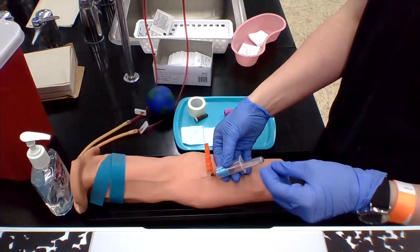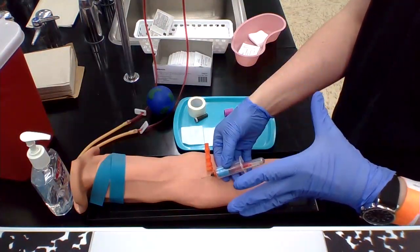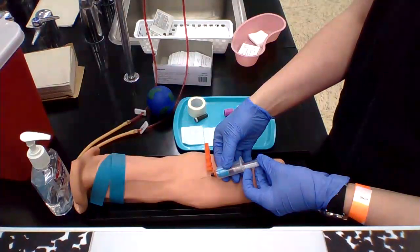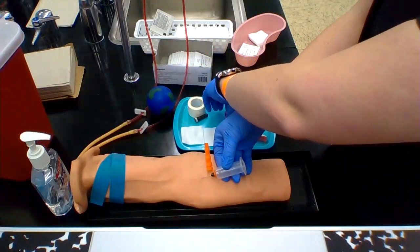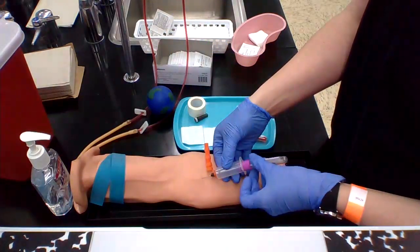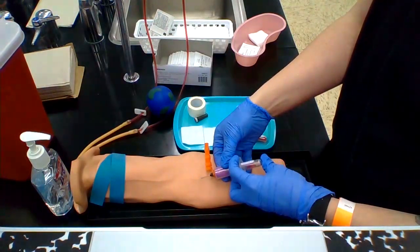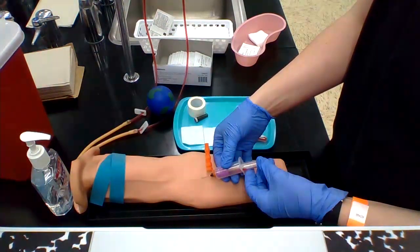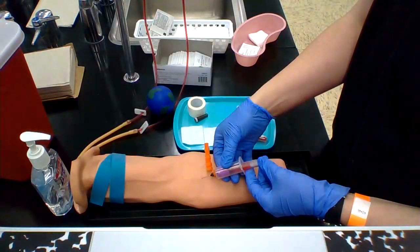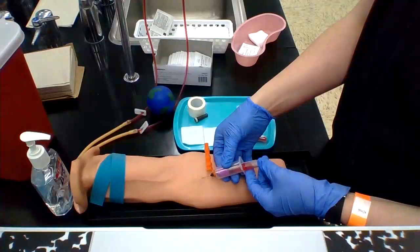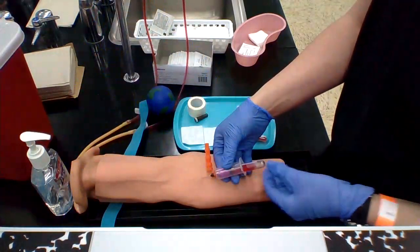If you don't hit your vein, you can go in a little bit or you can pull back a little bit. Don't dig around. If you don't hit the vein, pull out. Start again. Start on the other arm if you still can't get it after the second arm. Another phlebotomist or other staff member needs to perform the venipuncture. You shouldn't be poking people more than twice.